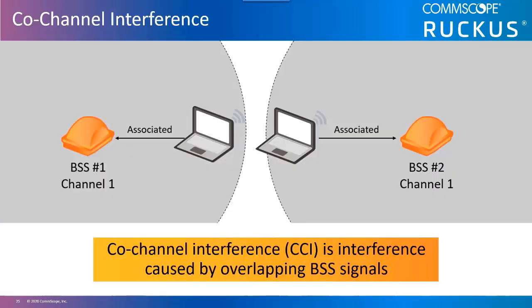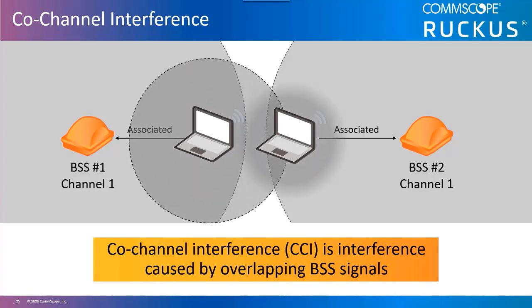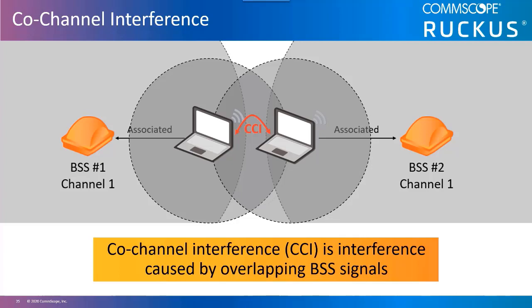Co-channel interference occurs whenever there are two basic service sets in close enough proximity on the same channel. This can be access points with overlapping coverage or clients on the edge of two overlapping basic service sets. In the example here, the client on the left is associated with the AP in basic service set 1, and the client on the right is associated with the AP in basic service set 2. The clients can cause co-channel interference with each other if they are in range of each other, and potentially even cause CCI on the access point to which they are not associated. CCI occurs within a channel and not within a basic service set, because stations — both APs and clients — must acknowledge frames from other basic service sets on the same channel if received with significant signal strength.